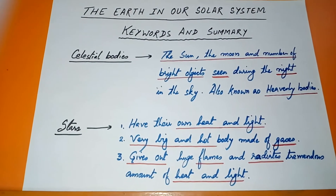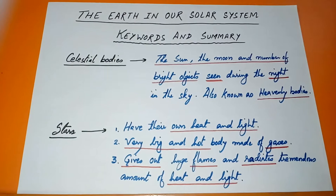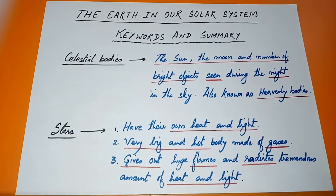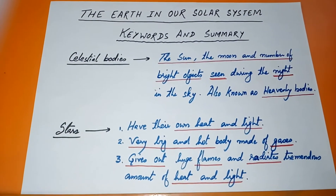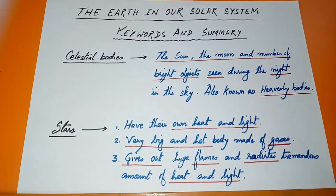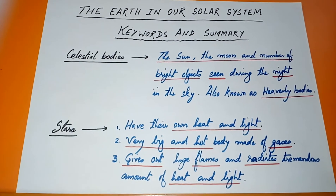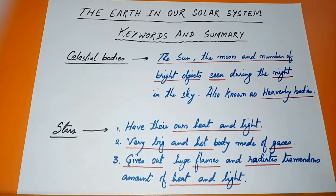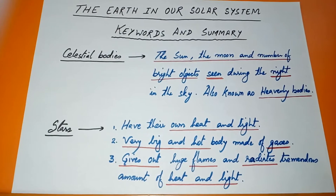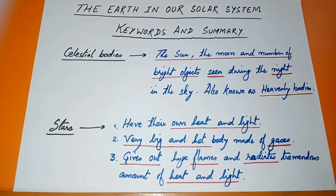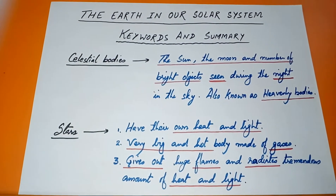The next term is stars. Stars have their own heat and light. They look very big and hot and are made up of gases. Stars give out huge flames and radiate a tremendous amount of heat and light. The key terms here are: they have their own heat and light, they are big and hot bodies made up of gases, and they give out flames and radiate tremendous heat.